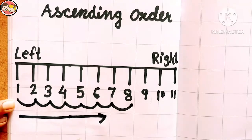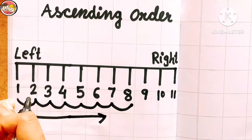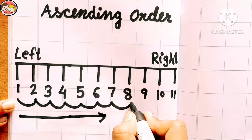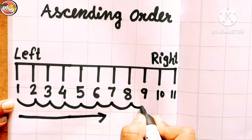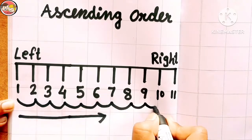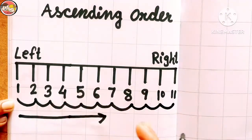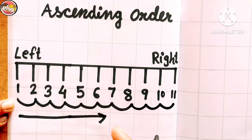So ascending order means arranging numbers from smallest to largest: eight, nine, ten, eleven, and so on. Ascending order means increasing order — arranging numbers from smallest to largest.